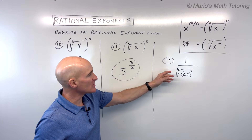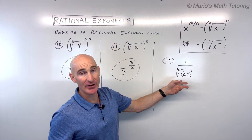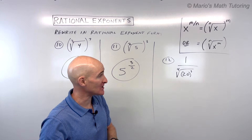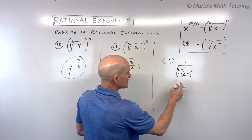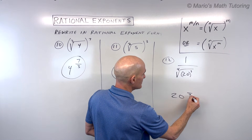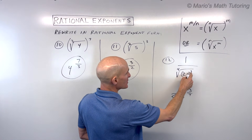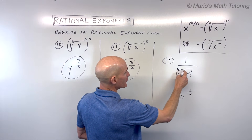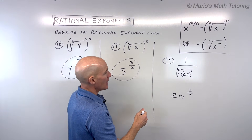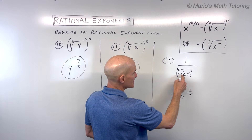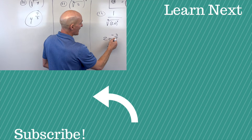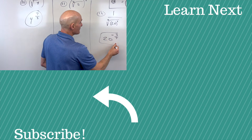For number 12, the expression is in the denominator, meaning we've taken the reciprocal, so it will have a negative exponent. The base is 20. The root goes in the denominator of the fraction, the power goes in the numerator, and because we took the reciprocal it's a negative exponent.